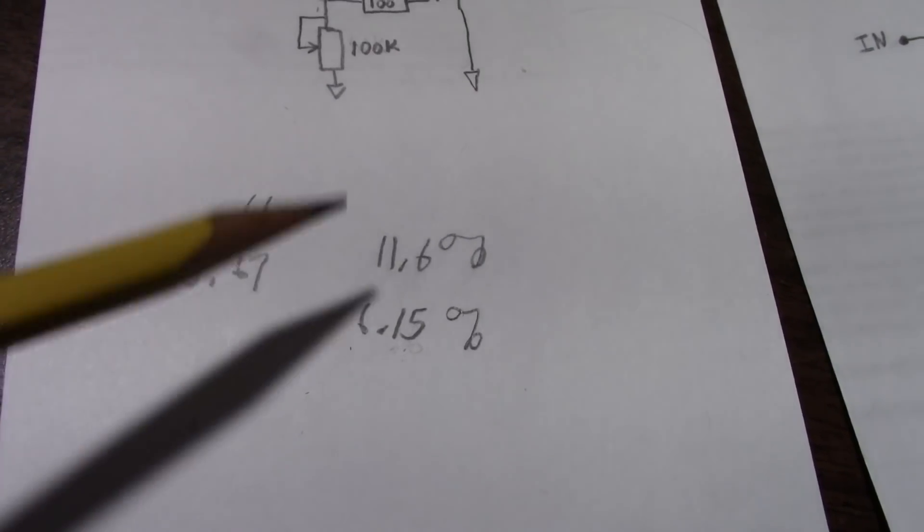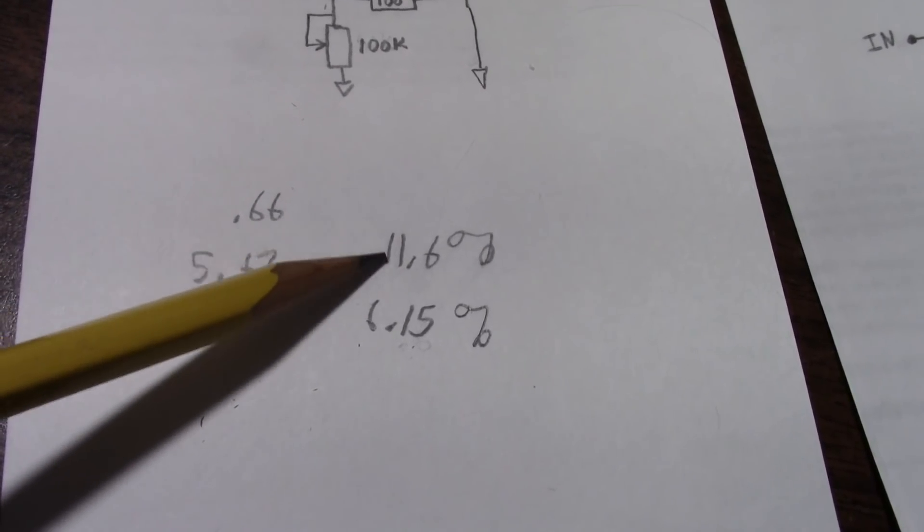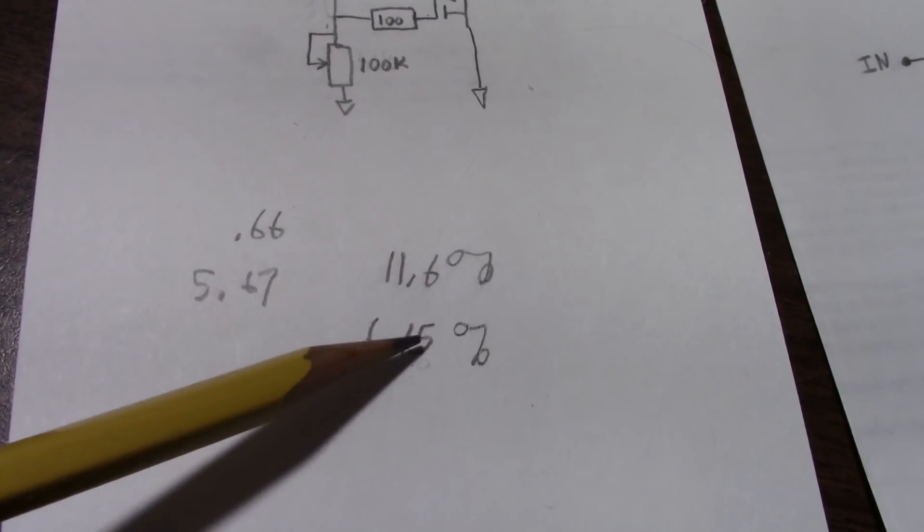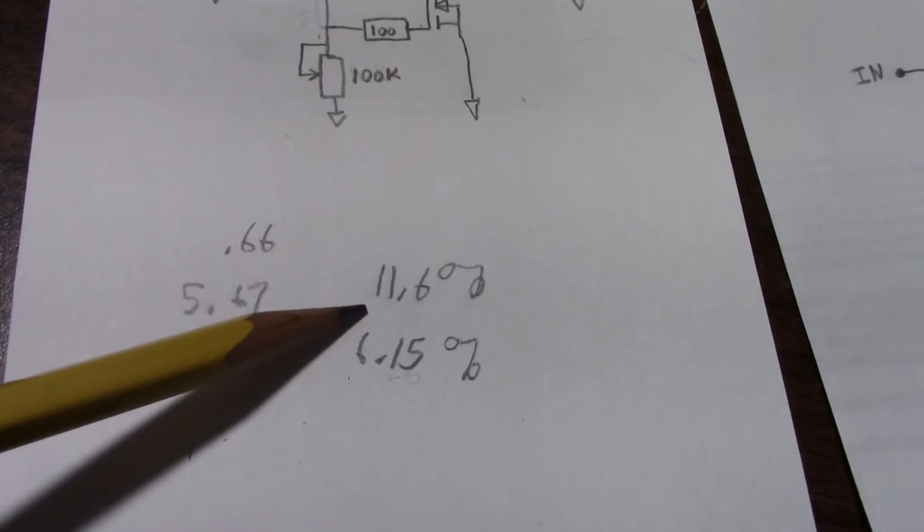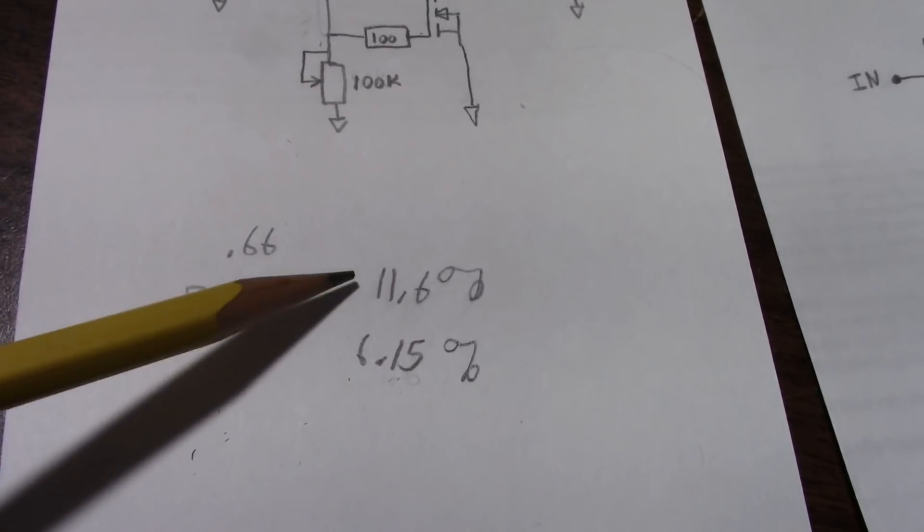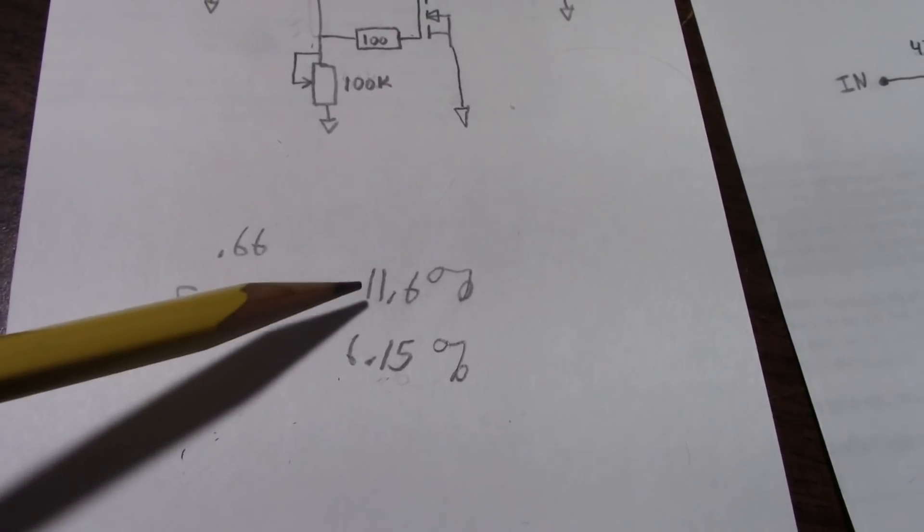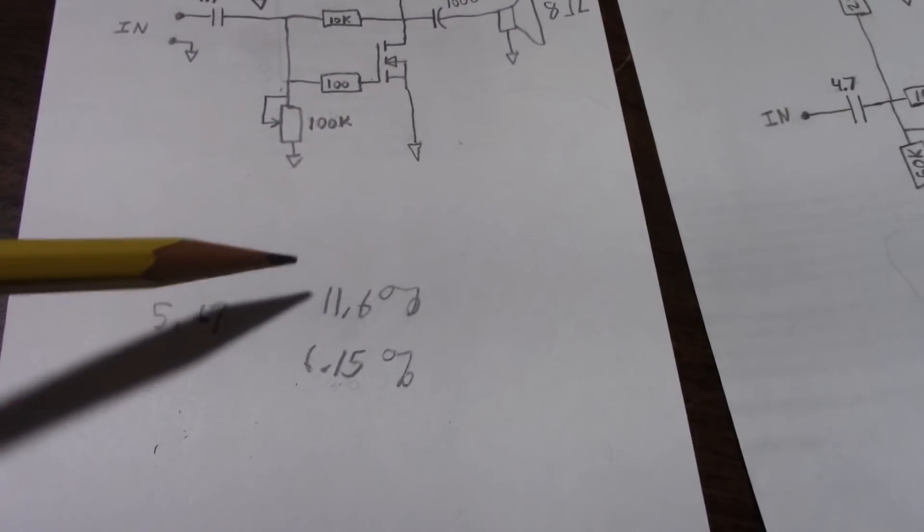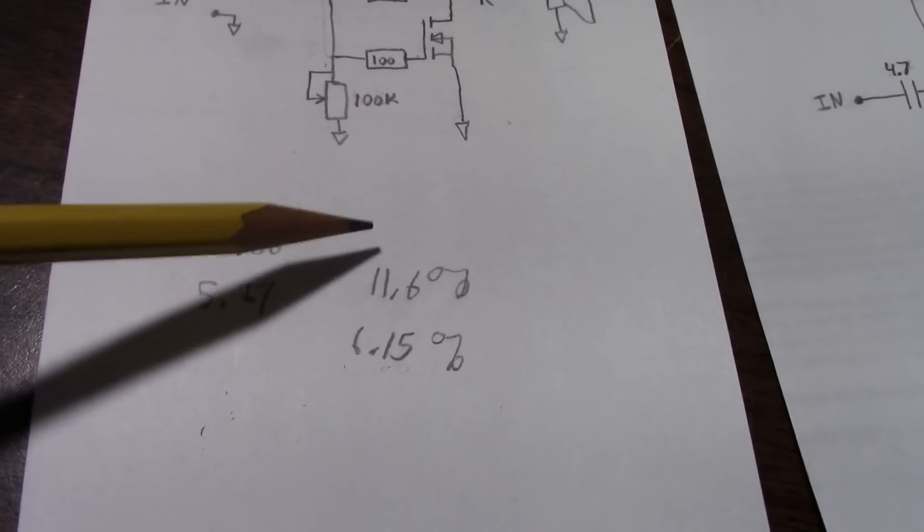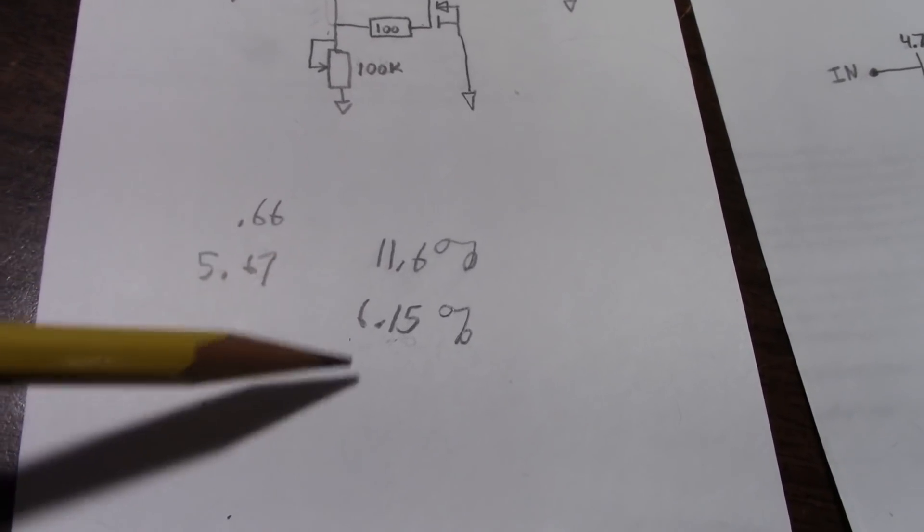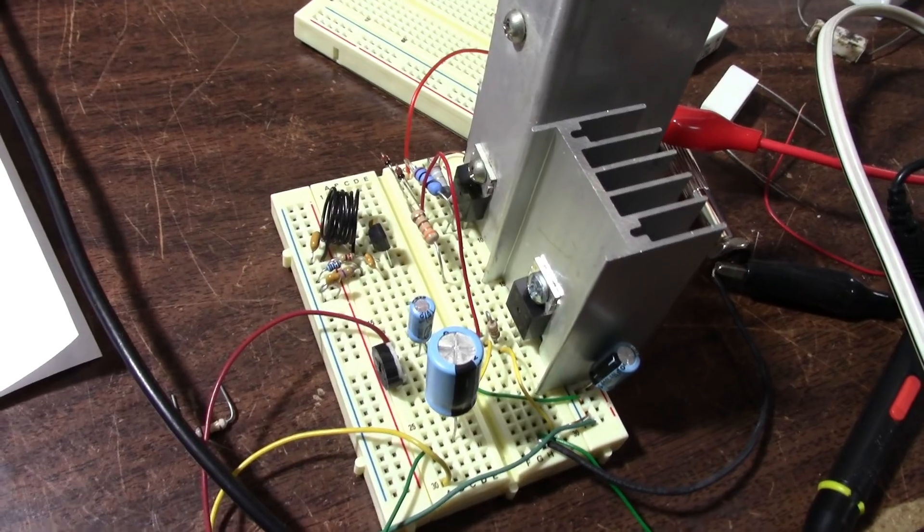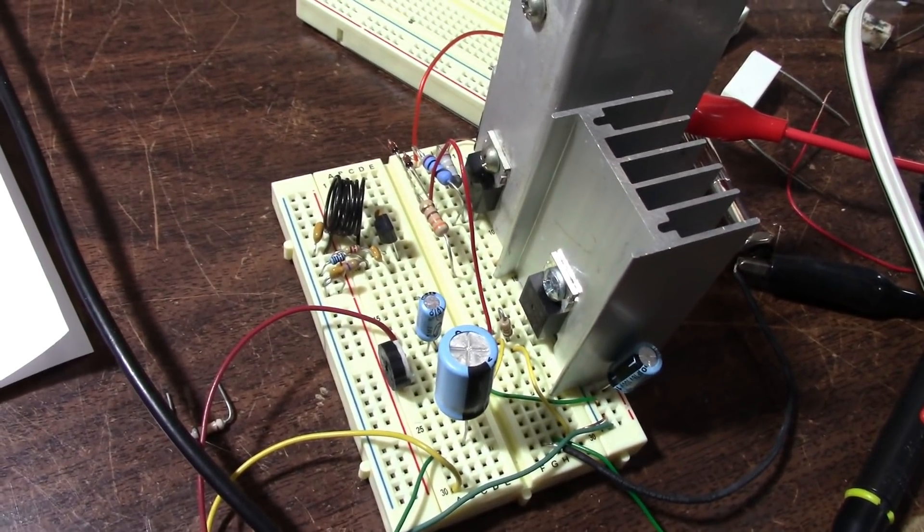The efficiency is improved. It's now 11.6 percent where the old circuit was only 6.15 percent. Well, that's not going to keep Greenpeace from kicking down your door. But it is much better than the previous circuit. And that's mainly because you're getting almost double the output power. Not quite. But you're really drawing the same current. Well, that'll do it for this one. Thanks for watching.